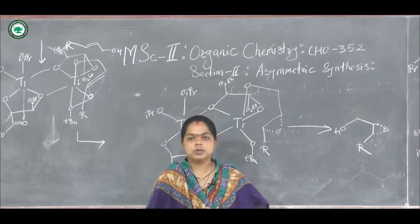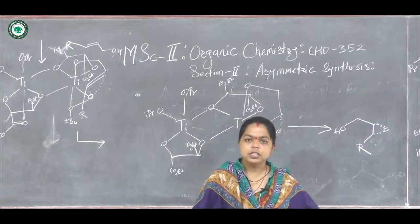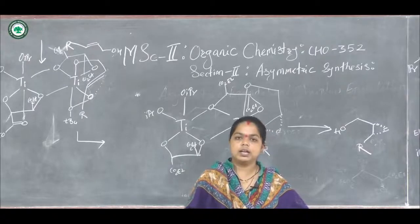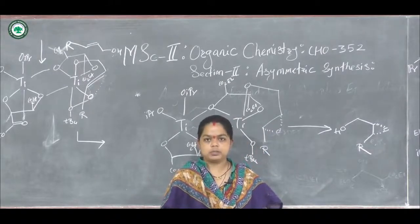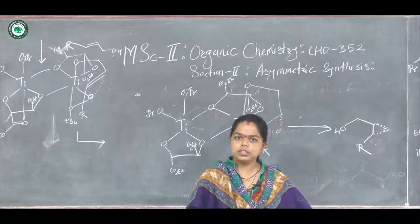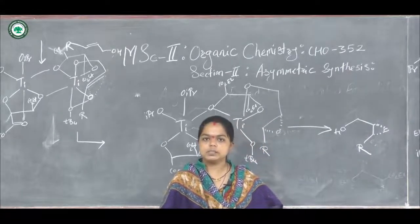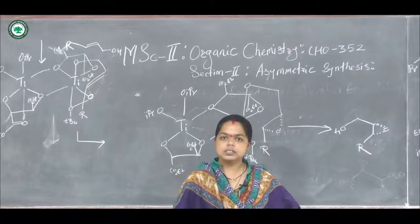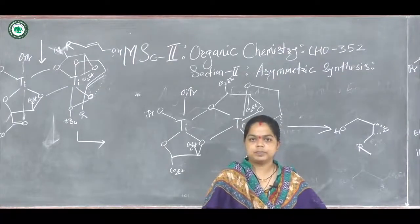This is about the Sharpless epoxidation reaction — it is used to convert allylic alcohols into the corresponding epoxides. In the next lecture, we will see examples of asymmetric reactions and another asymmetric hydroxylation reaction. Thank you.